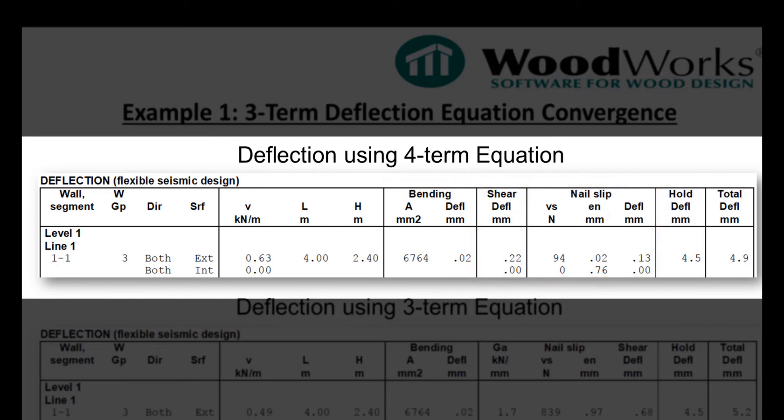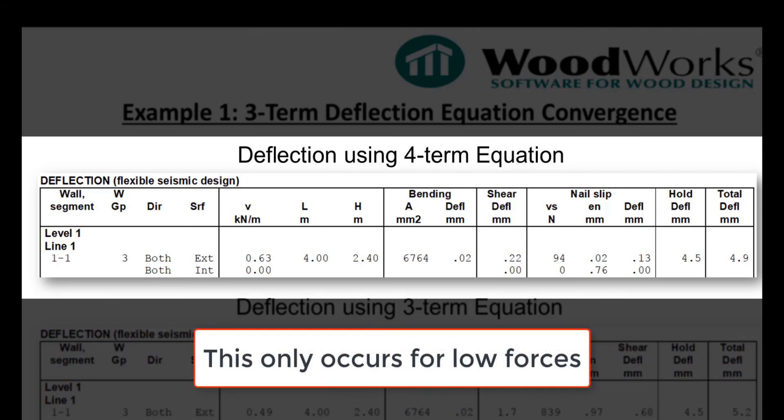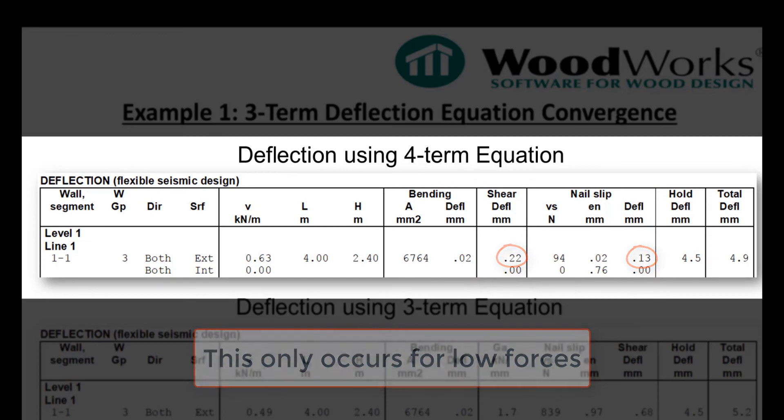Sometimes, it is impossible to converge on a solution, and the program bounces back and forth between two completely different solutions. Also, the slip term for gypsum is independent of the amount of force, while the slip term for wood sheathing does depend on the force. As a result, it is not possible to equalize deflection between the wood sheathing and gypsum, so all the load is distributed to the stiffer wood sheathing.